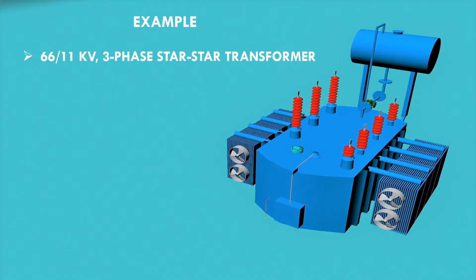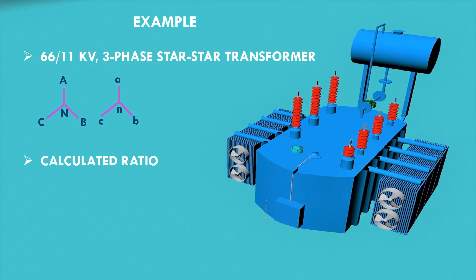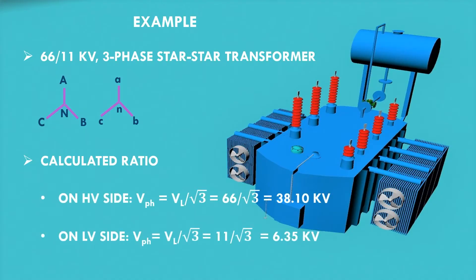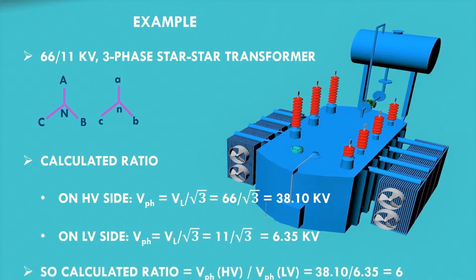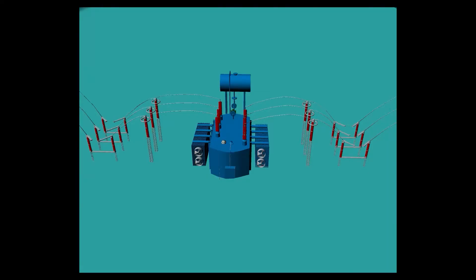To explain TTR with an example, suppose we have a 66/11 kV three-phase transformer connected in star-star mode. First, we find the calculated ratio from the nameplate data by computing the phase voltages on both the HV and LV sides — the calculated ratio turns out to be 6. Next, to find the actual turns ratio, we isolate and de-energize the transformer.